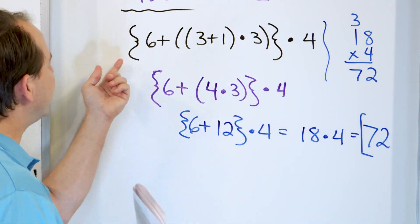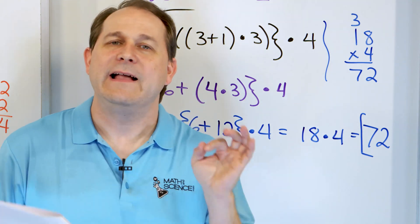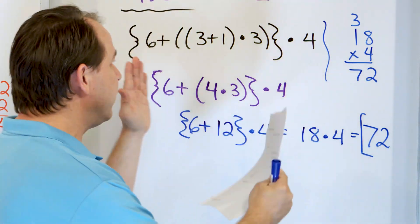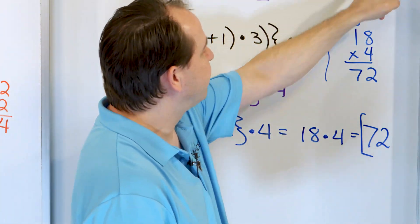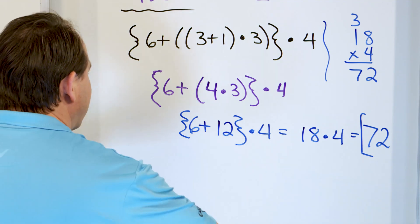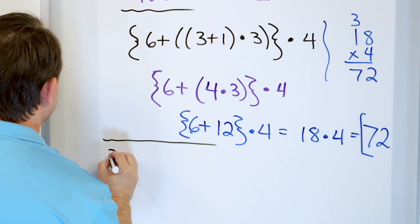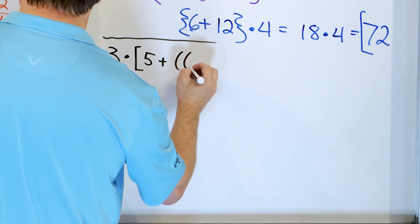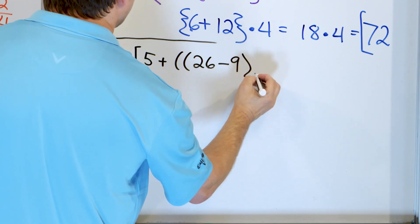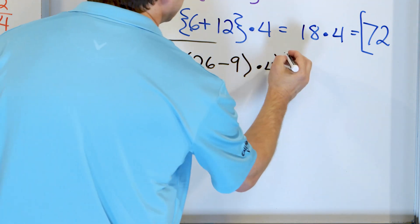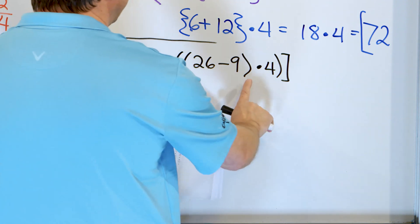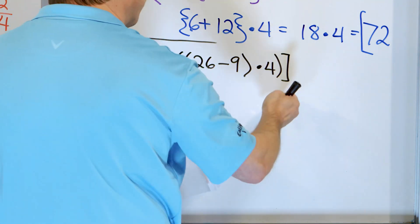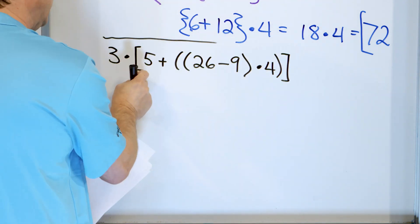So if you ever see weird-looking parentheses, don't freak out. It's just another set of parentheses. If you stack 3 or 4 levels of parentheses, it gets very hard to figure out which partner parenthesis goes with which, so we can use curly braces or brackets. Let me show you the next problem: 3 times, open bracket, 5 plus double parentheses, 26 minus 9, close one off, then multiply by 4, close another, then closing bracket. This parenthesis goes with this one, this parenthesis goes with this one, and these brackets go together. We use brackets instead of more parentheses because it's easier to read.